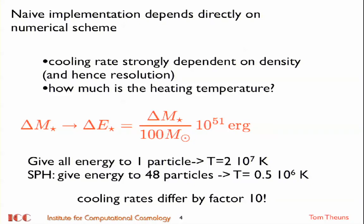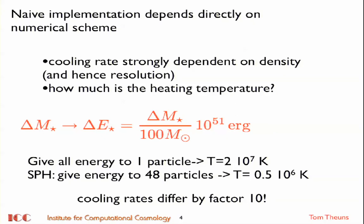The cooling rate depends strongly on density. For example, you can decide to give all your energy to one particle, then you get a reheating temperature of 2 times 10 to the 7 Kelvin. Or you say, I do SPH, I need to smooth my energy over the particles. I give it to 48 particles. You get the reheating temperature of a half times 10 to the 6 Kelvin. These values are set by the Chabrier initial mass function, by physics. But the cooling rates differ by a factor of 10.